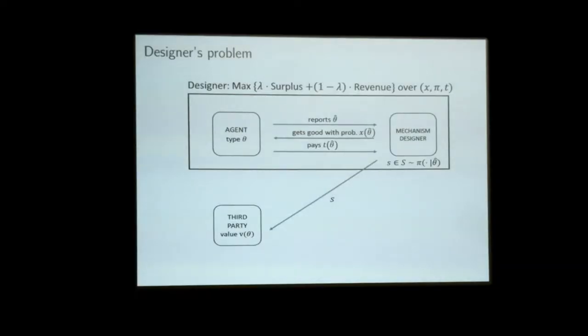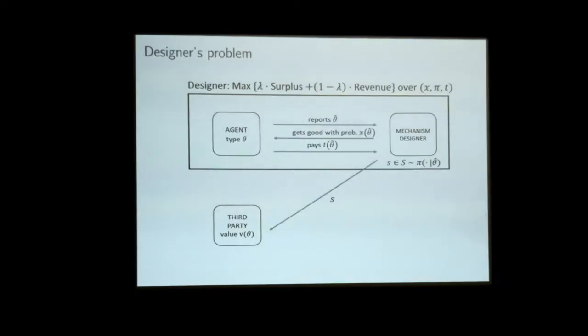One quick clarification: the idea that the data revealed by the mechanism can be used by outsiders is one of the motivations for differential privacy, which you are probably familiar with — we saw a talk on Tuesday about this. This is a different idea in that privacy here is not a goal in itself; it's just one of the possible designs. In principle, the designer could actually prefer to have a lot of transparency. For example, in the resale case, if you care about surplus, you actually want full transparency, which gives you the first best because resale will be fully efficient.